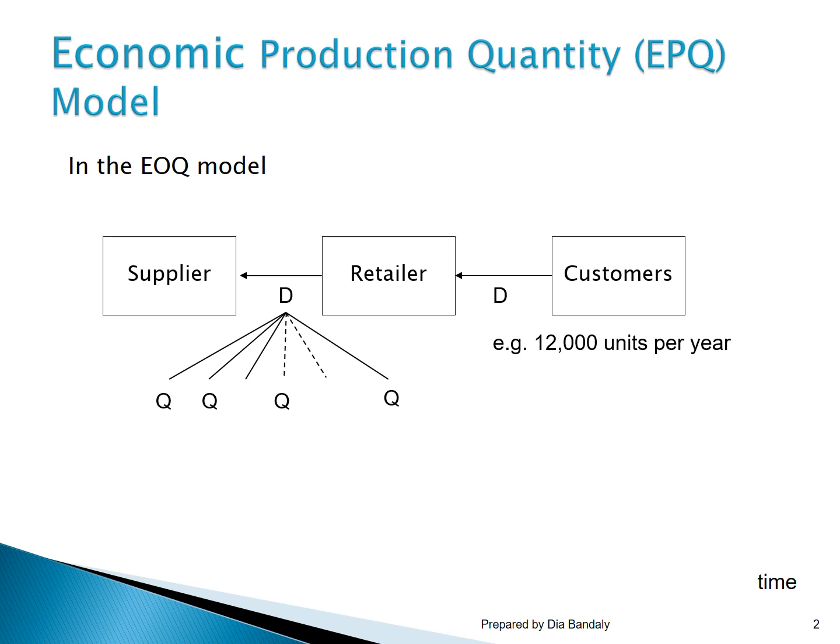For example, he can order 12,000 — that's an extreme case where he orders only one time. Or he can split it into two orders of 6,000, or order 3,000 four times, or order 1,000 twelve times, and so on. There are so many options, and that's why we need the model to help us determine the optimal quantity — giving the EOQ model its name: the economic order quantity. It's called 'economic' because it tells us the quantity that minimizes our total inventory cost.